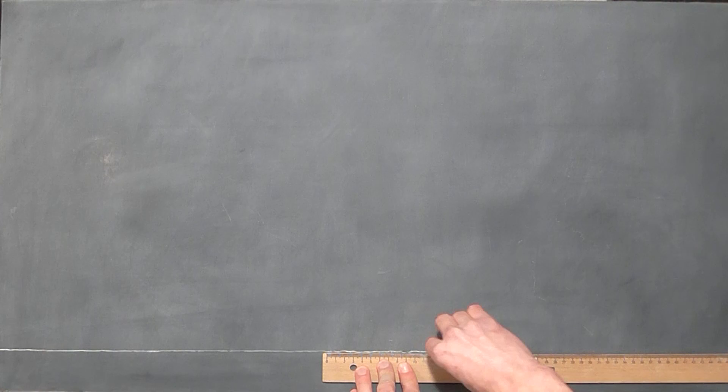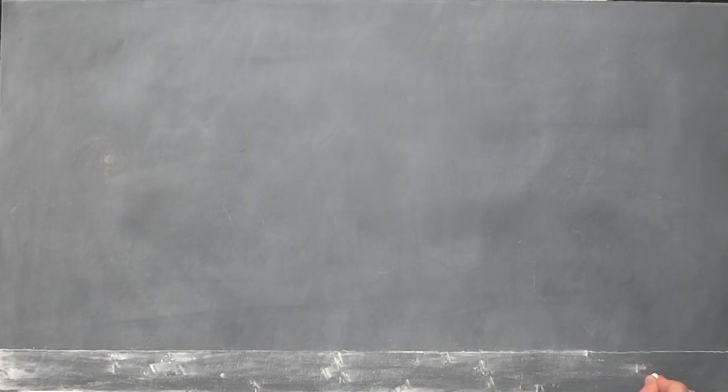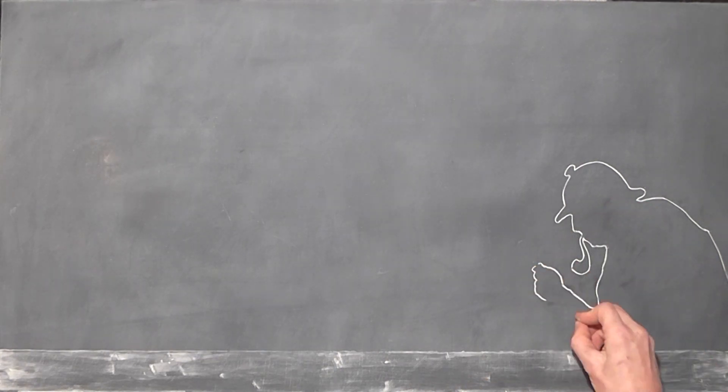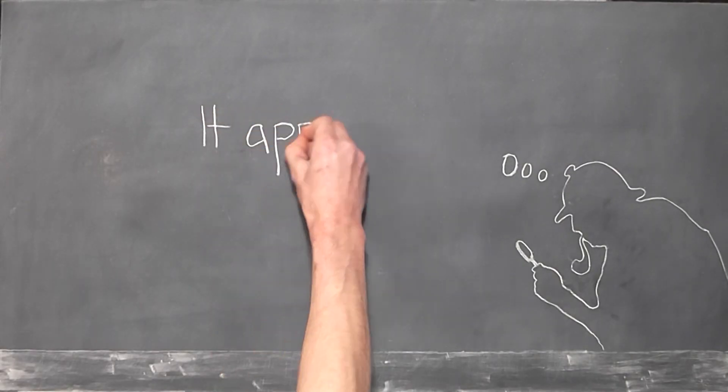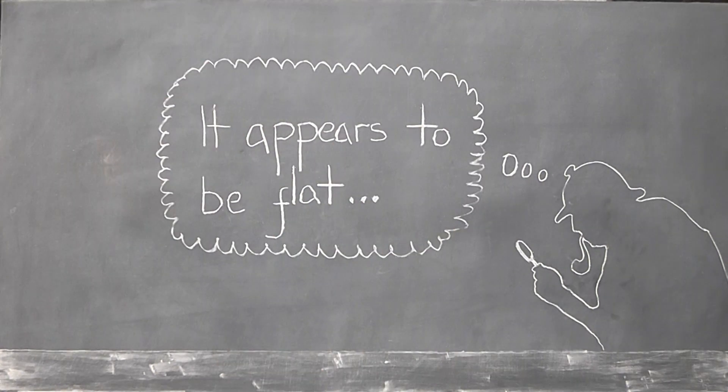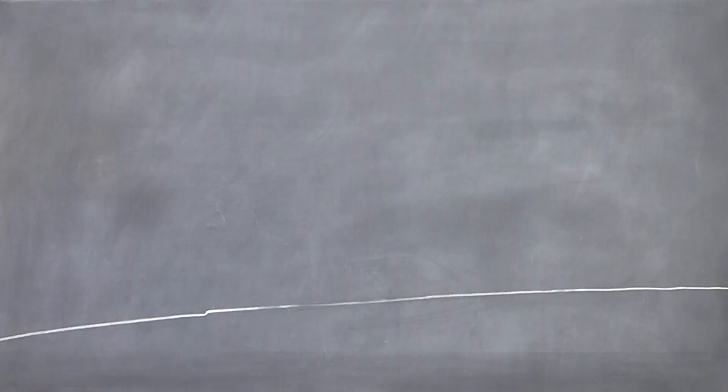But before we get to the main point, let's take 30 seconds to examine why people first came to believe the earth is flat. Well the answer is obvious really. From the perspective of someone on the ground, the earth looks flat. Really flat. Knowing as we now do the exact dimensions of the earth, we can see just how flat it looks.